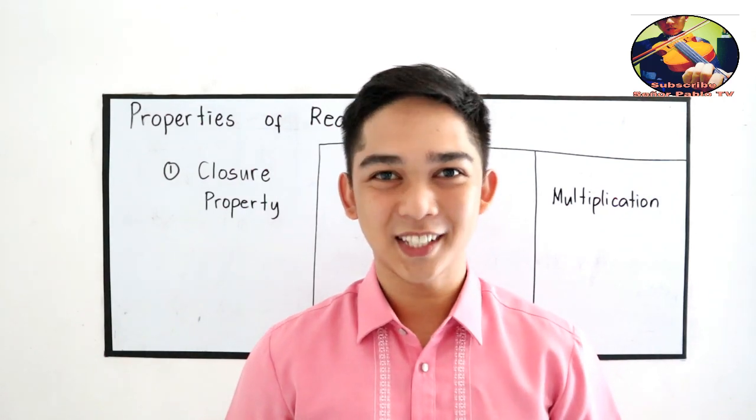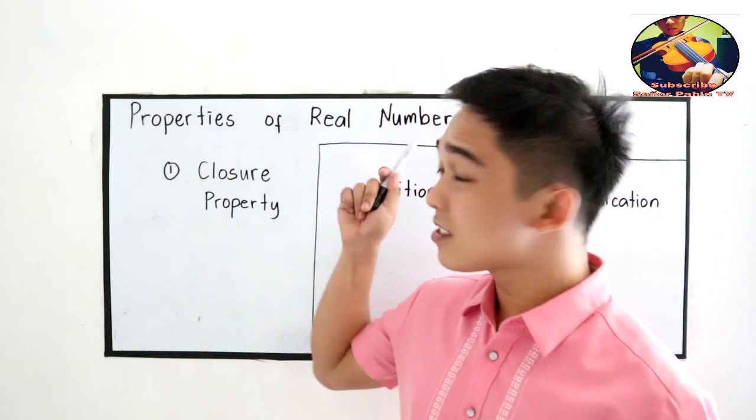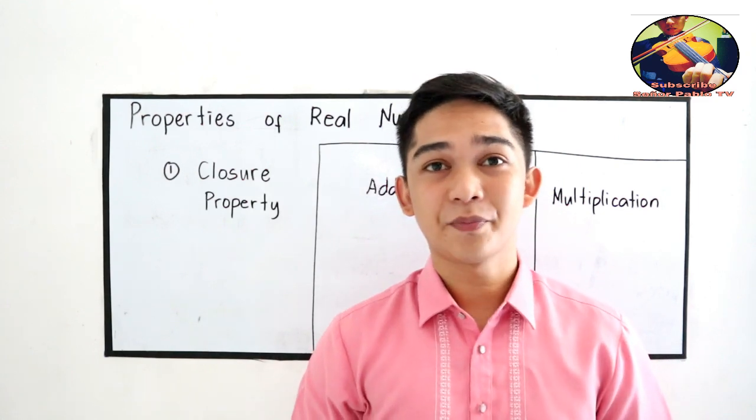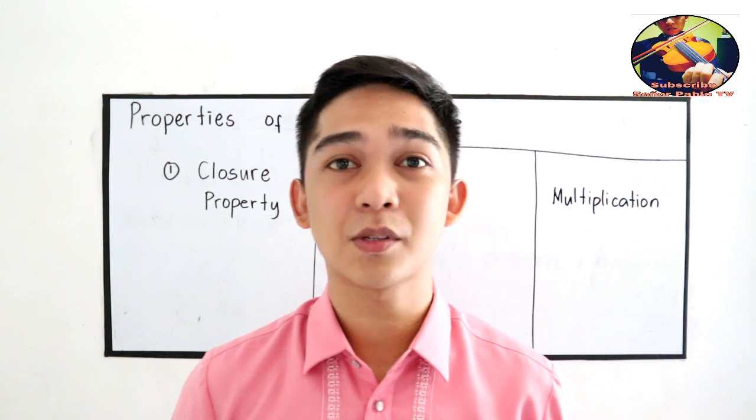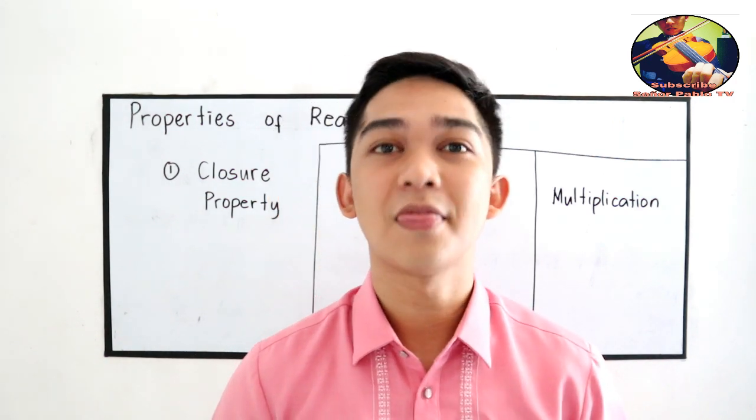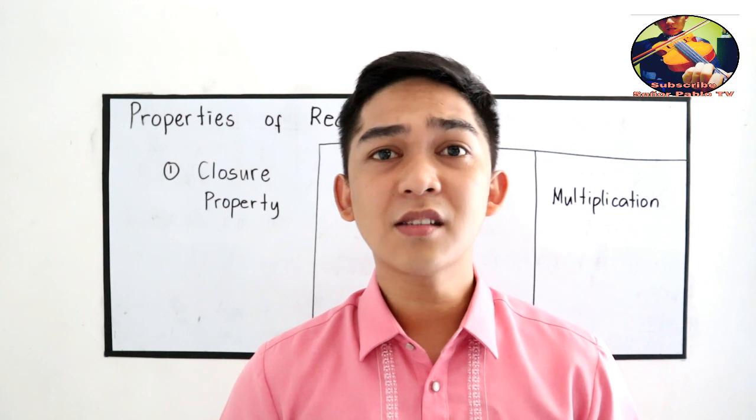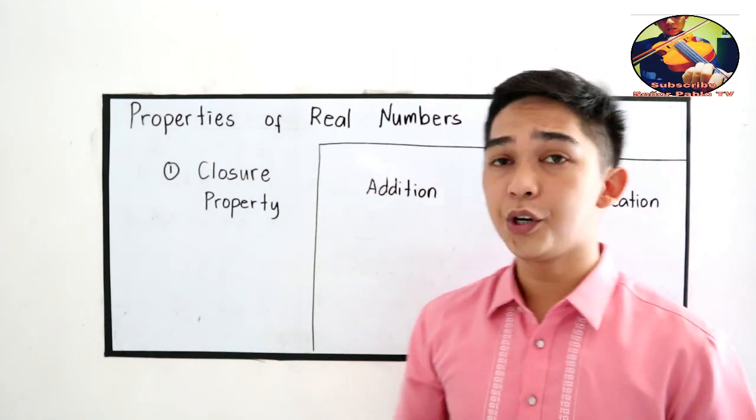Grade 7 Lesson 3: Properties of Real Number System. In this lesson, we're going to learn the different types of properties in our real number. Let's start with the closure property.